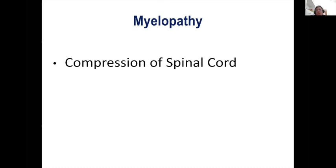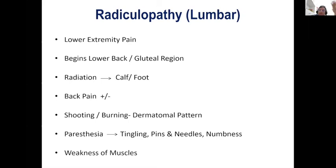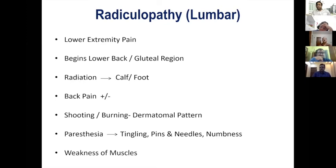A classic example of radiculopathy due to a disc would be lower extremity pain starting in the back or gluteal region and typically radiating into the lower leg along a nerve root distribution into the calf or foot. Back pain may or may not be present. The patient may complain of a shooting or burning pain in a dermatomal pattern along L5 or L4, whichever nerve root, following its distribution. The patient may also complain of paresthesia like tingling, pins and needles, numbness, or sometimes muscle weakness.